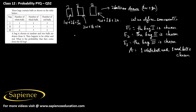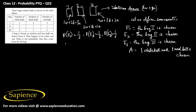P(E1), the probability of choosing bag one, is 1/3. P(E2), the probability of choosing bag two, is also 1/3. P(E3), the probability of choosing bag three, is also 1/3, since each of these bags is equally likely to be chosen.